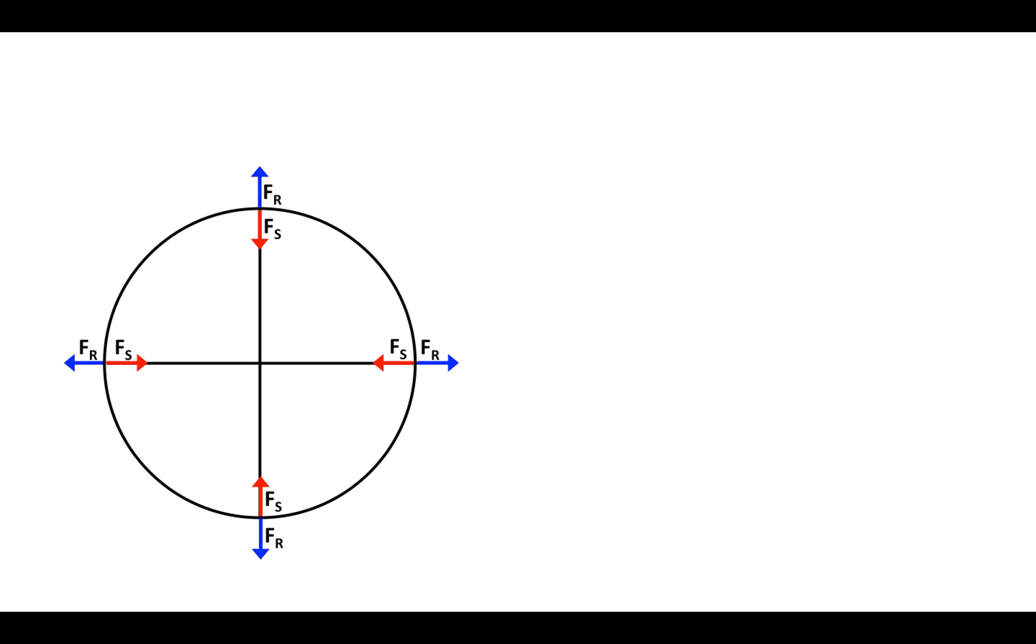Any tension that I put on the spokes are shown with the red arrows, the force of the spoke which is pulling the rim inward, and that is opposed by a reaction force which is in blue trying to keep the rim from being compressed circumferentially.